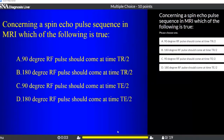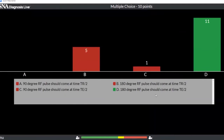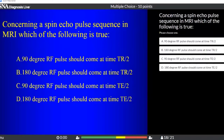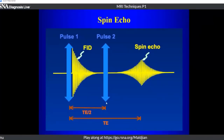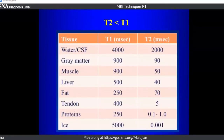Quick check: the correct answer is that the 180-degree pulse should come at time TE/2. You want the 180-degree pulse halfway between the 90-degree pulse and when you're going to sample the echo.